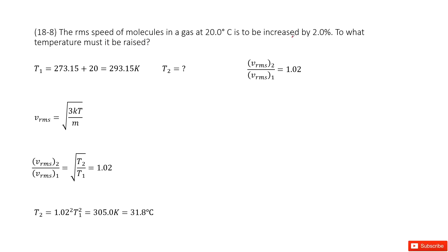So it's increased by 2%, right? We can consider initially state 1, finally state 2. So the speed v2 over v1 increased 2%, so the ratio is 1.02.